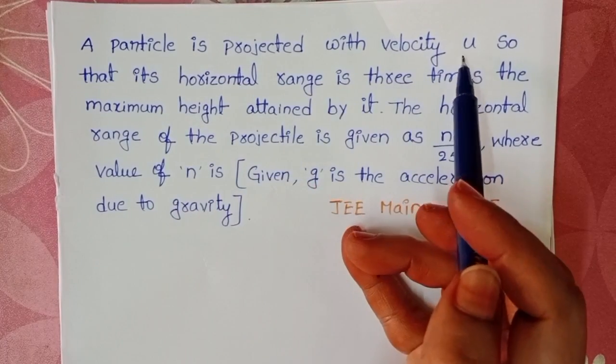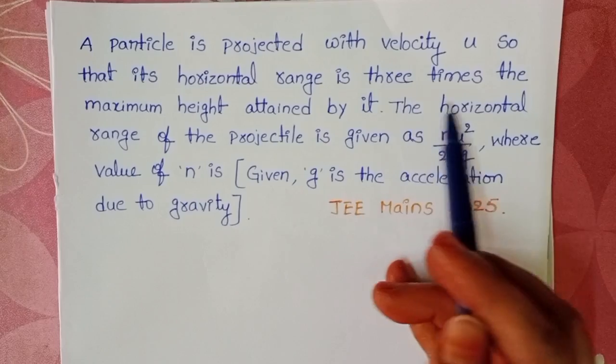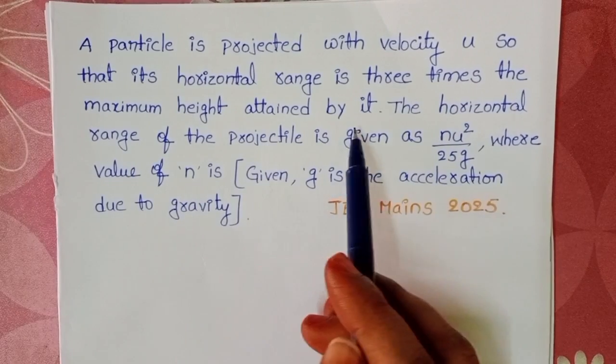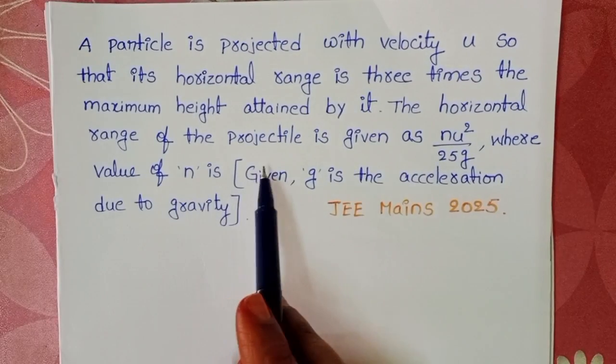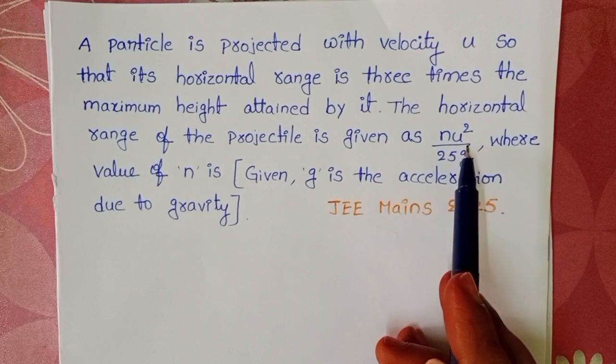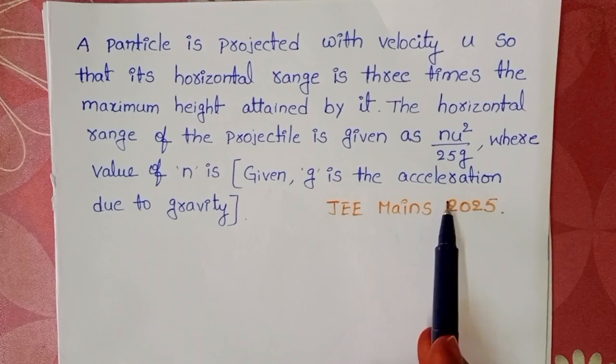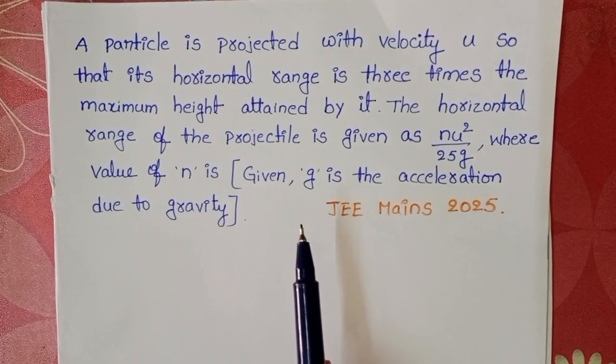A particle is projected with velocity u so that its horizontal range is three times the maximum height attained by it. The horizontal range of the projectile is given as nu²/25g, where the value of n is to be found. g is the acceleration due to gravity.